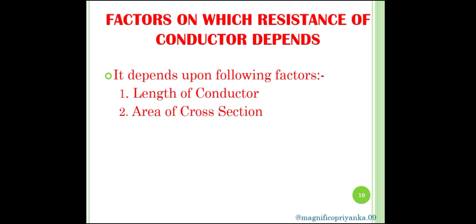Resistance of a conductor is inversely proportional to its area of cross section. If we double the area of cross section, resistance gets halved and hence more electricity can pass through it. But if we reduce the area of cross section, resistance increases and hence less electricity can pass through it.